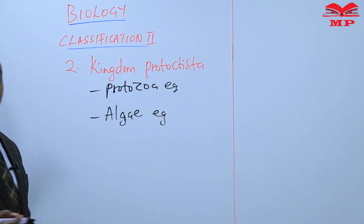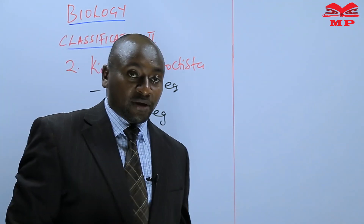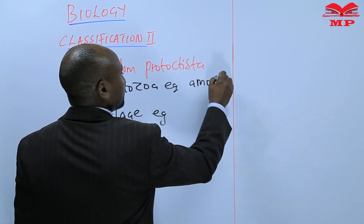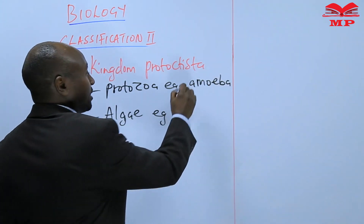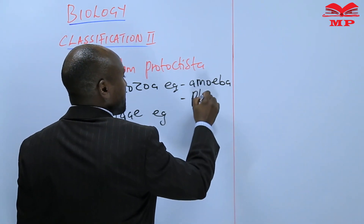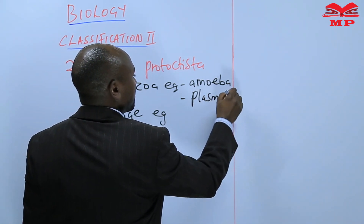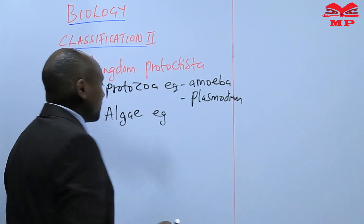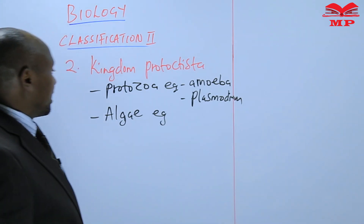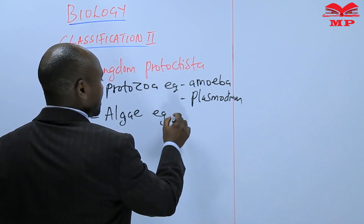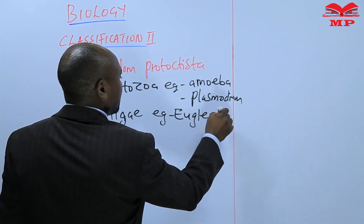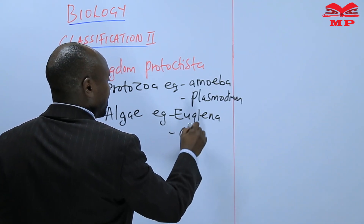We will give examples of a few protozoa — for instance, amoeba. Amoeba is a protozoa. We can also take an example of Plasmodium; it is also a protozoa. In the case of algae, we shall take examples such as Euglena and Chlamydomonas.